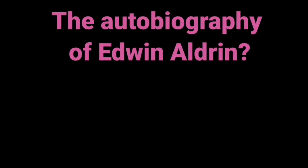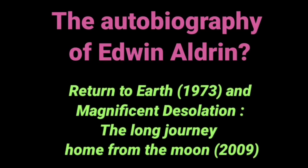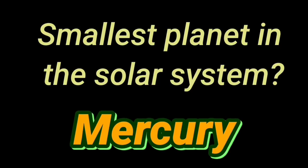What is the autobiography of Edwin Aldrin? Return to Earth, 1973, and Magnificent Desolation: The Long Journey Home from the Moon, 2009. What is the smallest planet in the solar system? Mercury. When was Chandrayaan 1 launched? October 22nd, 2008.